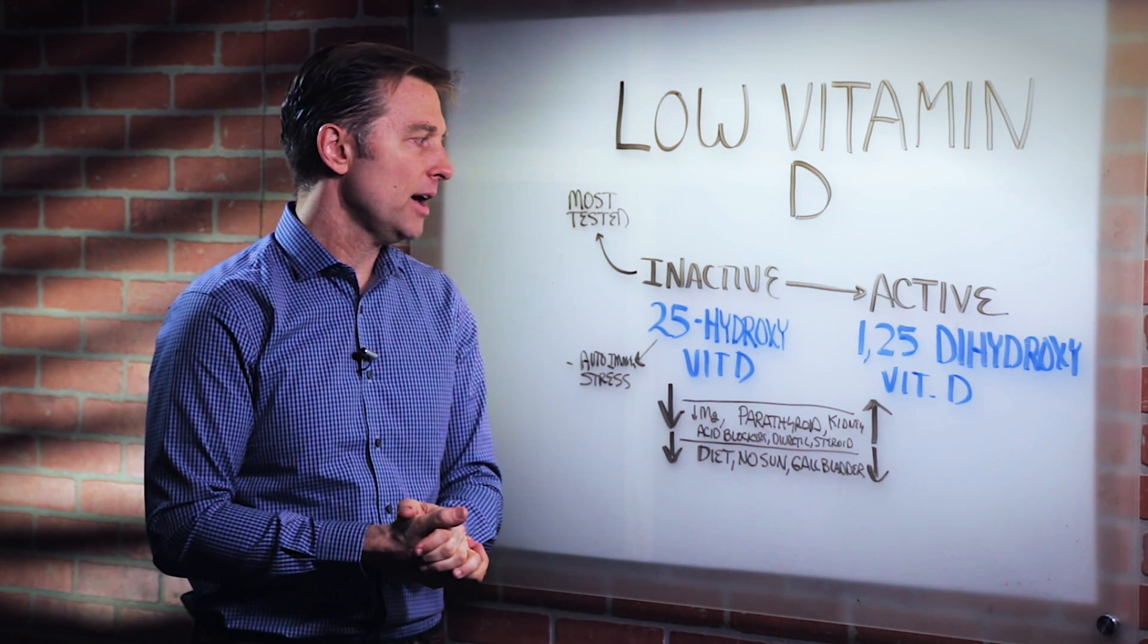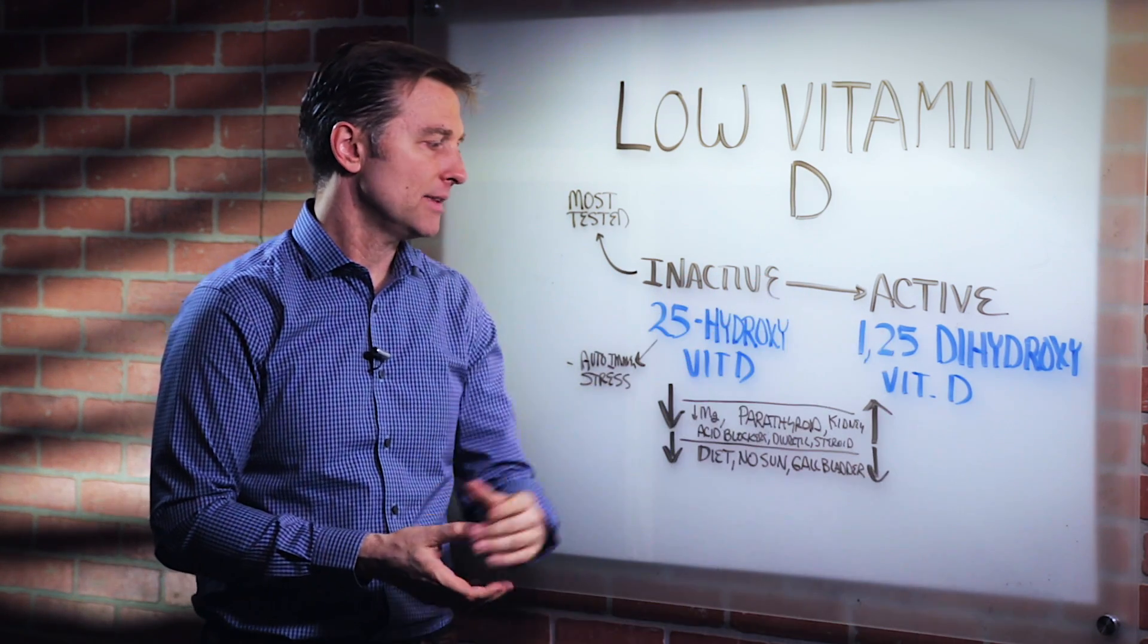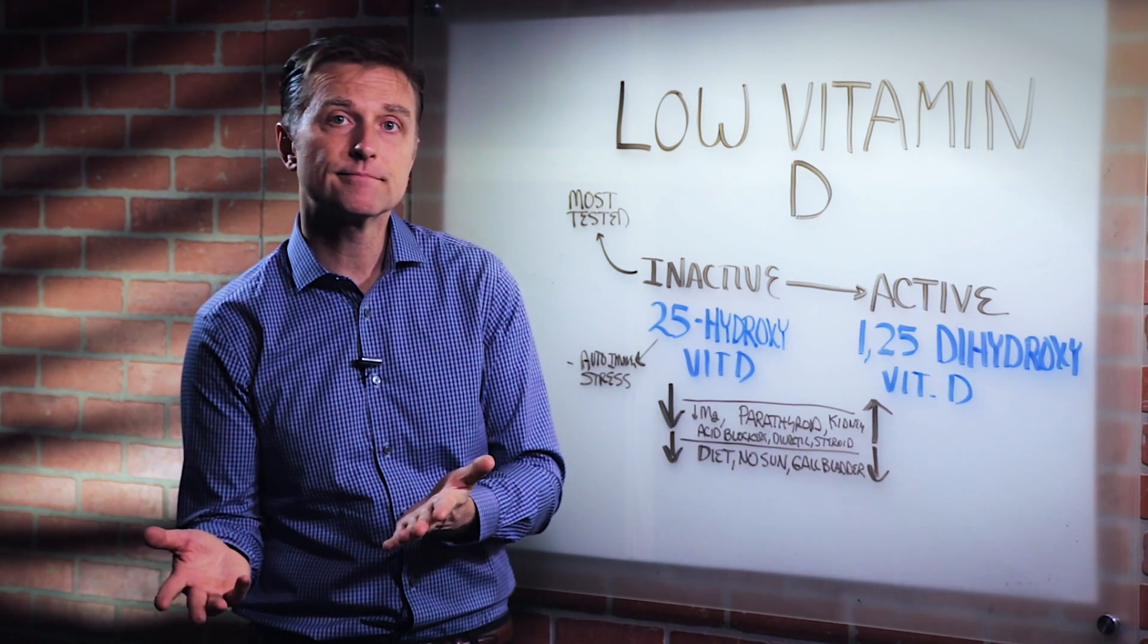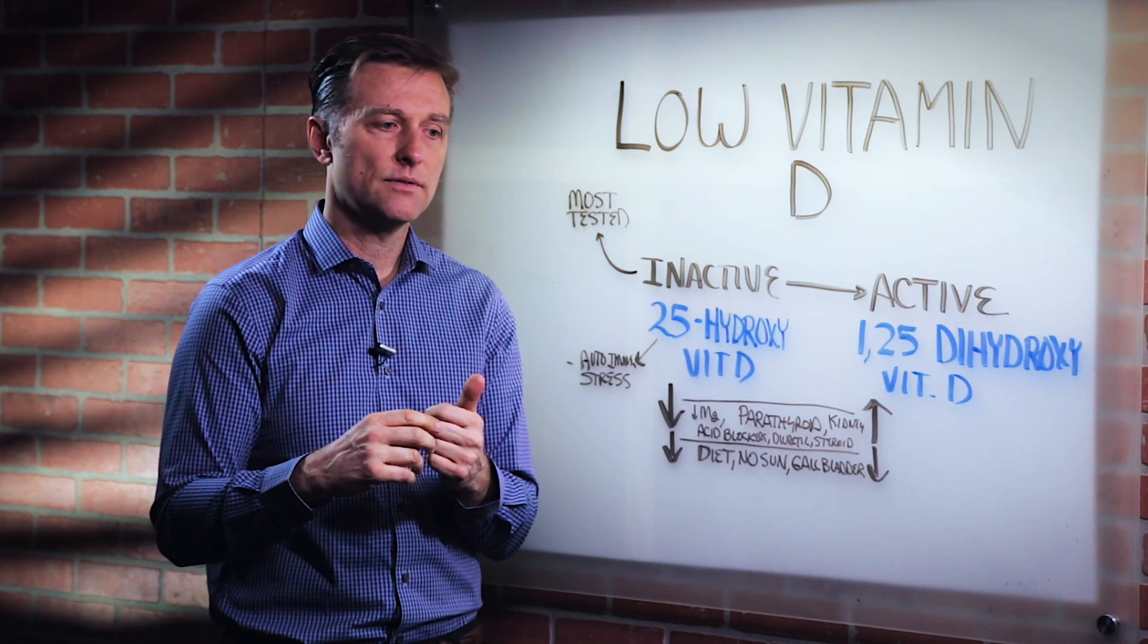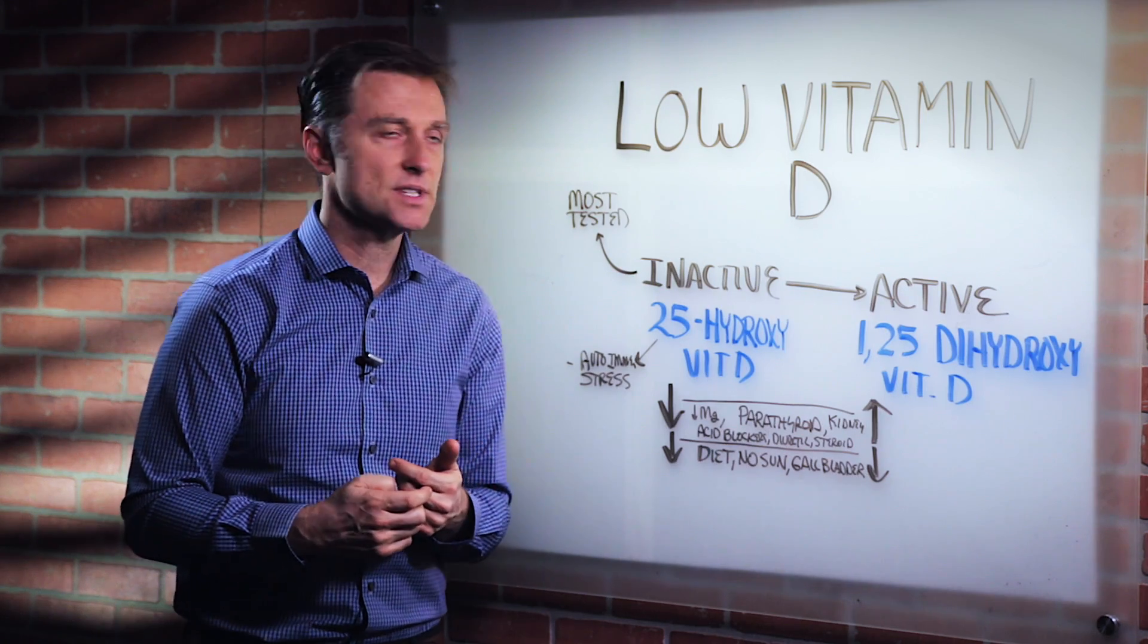For example, if you have low inactive and low active, that could be just because you're not consuming vitamin D in your diet, which is mainly animal products, or if you're a vegan it could come from mushrooms, but it also comes from sun.